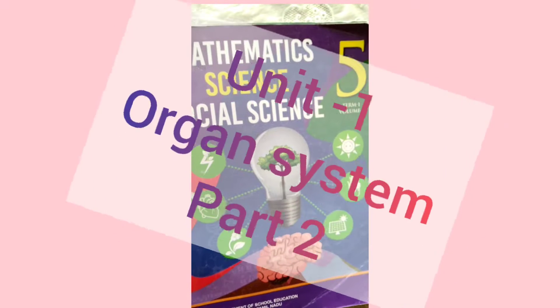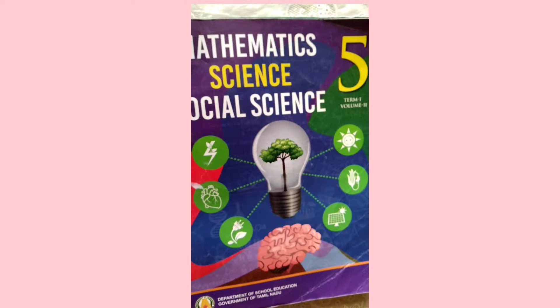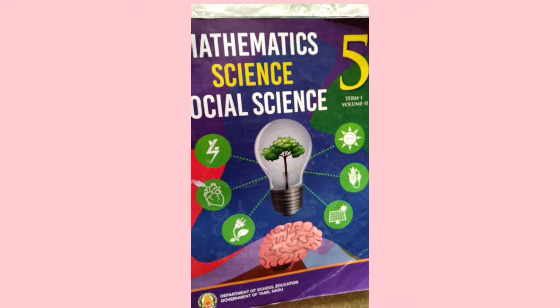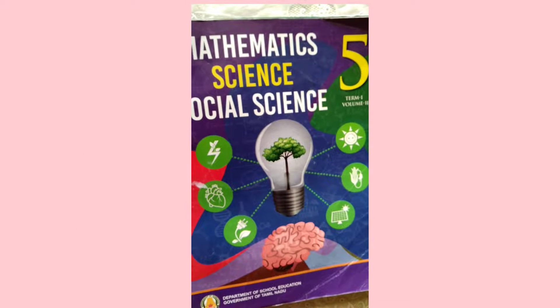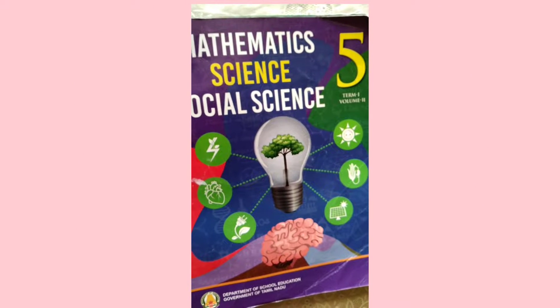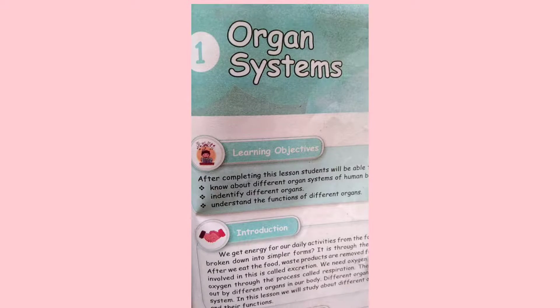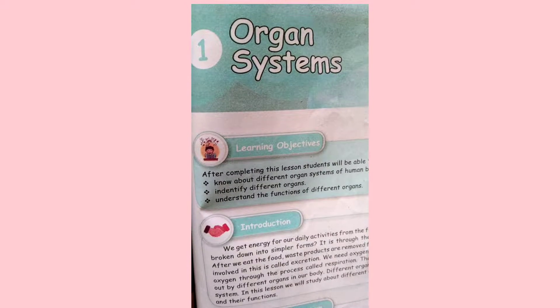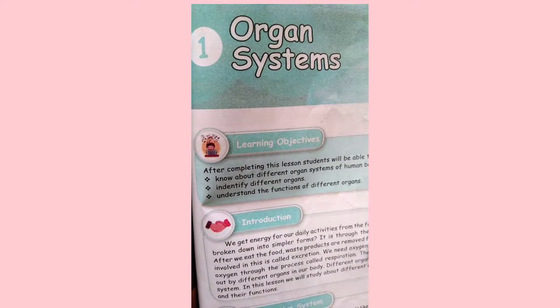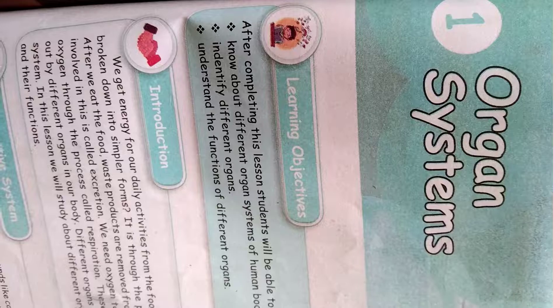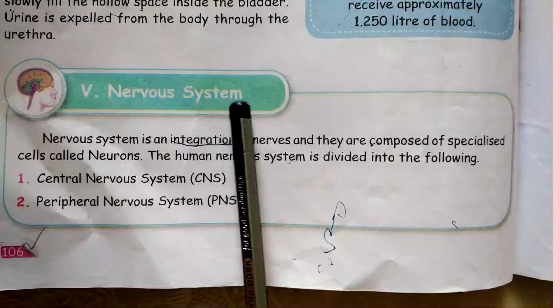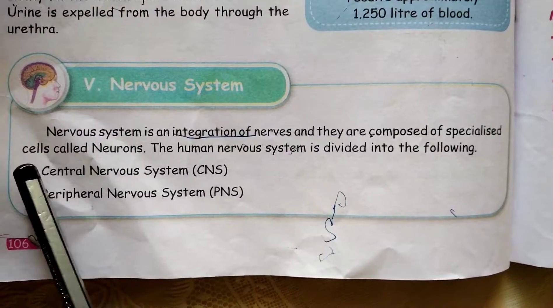Hi guys, welcome to Altaja Kids World. Today we are doing science with the standard term 1, Unit 1 Organ System Part 2: Nerve System.